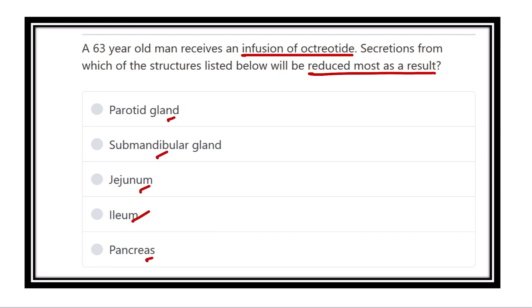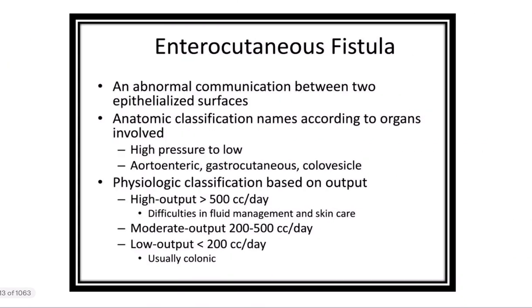We have to find out one of the glands or organs whose secretion is reduced by the infusion of octatide. First of all, let's see about the enterocutaneous fistula.